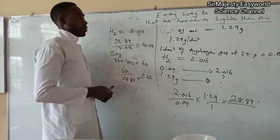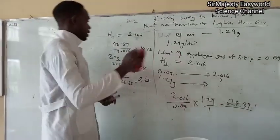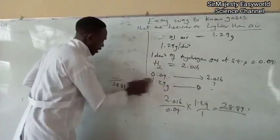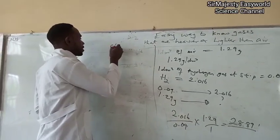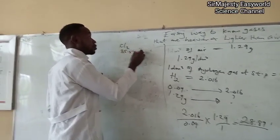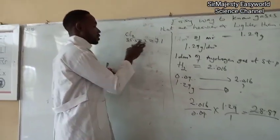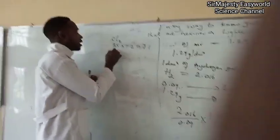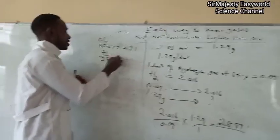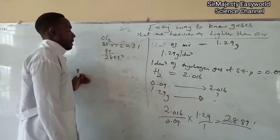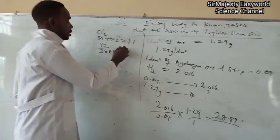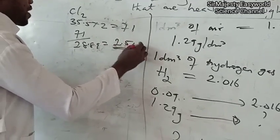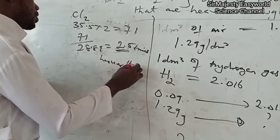You can do that for chlorine gas also. Chlorine is 35.5. Remember chlorine is diatomic. So, we have 35.5 times 2, which will give you 71. 71 is far bigger than 28.8. So, how many times is chlorine heavier than air? 71 divided by 28.89, which will give you 2.45. Approximately 2.5. So, chlorine is 2.5 times heavier than air.